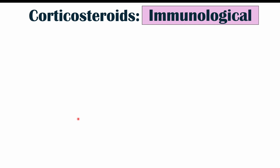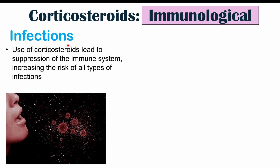With regards to corticosteroids' effects on the immune system, we can see an increased risk of infections. Use of corticosteroids leads to suppression of the immune system — part of the reason they are used in the first place — but this increases the risk of all types of infections, including fungal, bacterial, and viral infections. This is especially the case with prolonged use and higher doses. Patients on systemic corticosteroids are at a higher risk for infections overall.